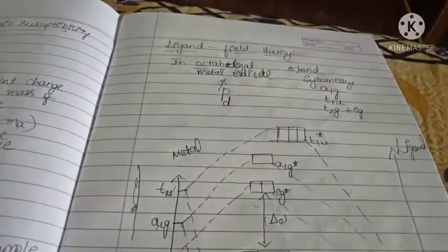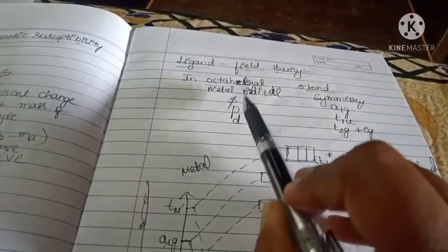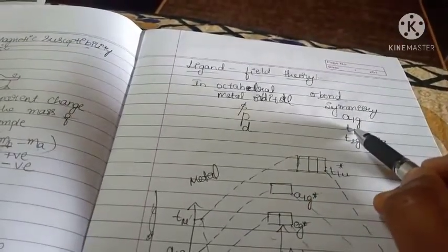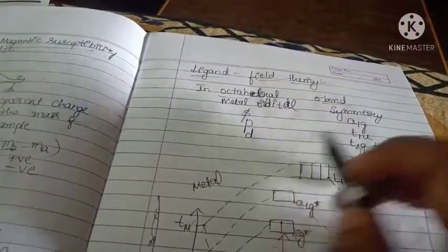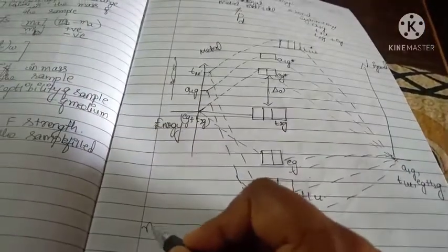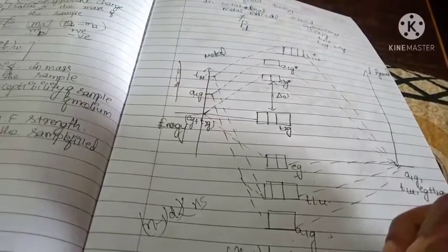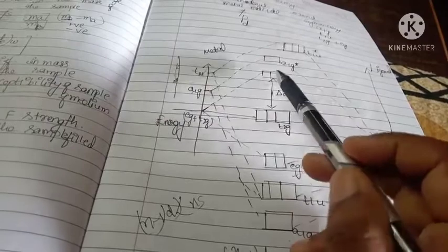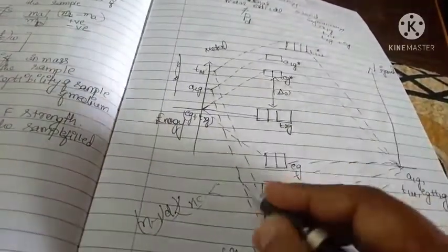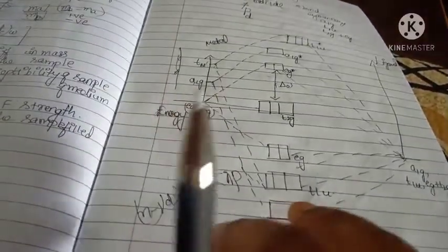In the last class we learned about ligand field theory. For octahedral sigma bond formation, both sp and d orbitals are explained, whereas VBT and CFT explain only the d orbital. For s orbital, the symmetry is a1g; for p orbital, t1u; for d orbital, t2g plus eg. In the energy level diagram, the n-1 d orbital has less energy compared to ns, and s orbital has less energy compared to p orbital.